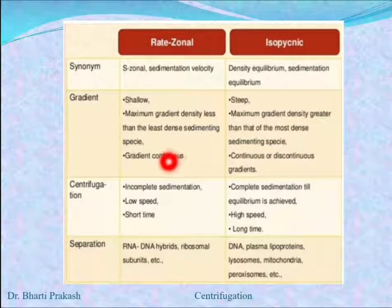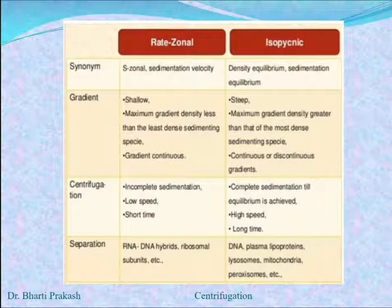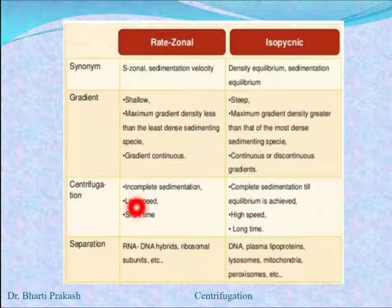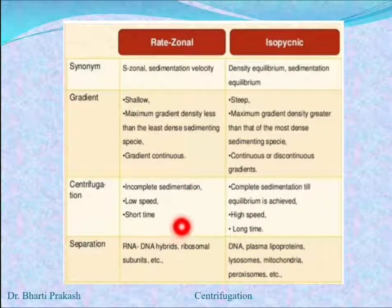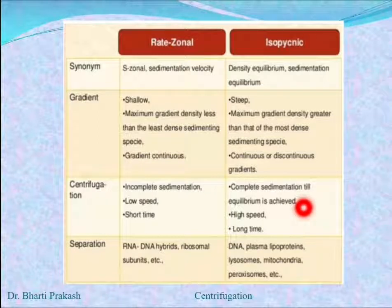In rate zonal, the gradient is continuous, whereas in isopicnic sedimentation the gradient can be either continuous or discontinuous. In the centrifugation process, rate zonal sedimentation is incomplete, the speed is low, and the time taken is short. In isopicnic separation, the sedimentation is complete until equilibrium is achieved, the speed is high, and the time taken is also long.